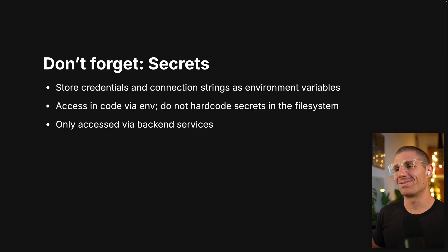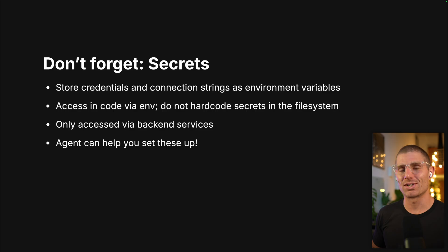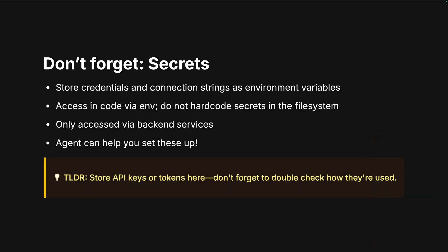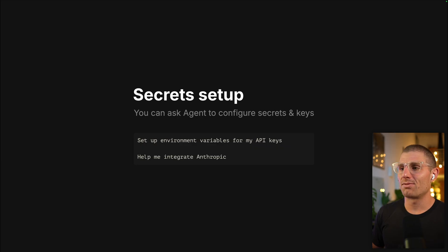Only access secrets with backend services — Agent's going to help you out with all of these things by default in Replit, but you have to double check. That's kind of the vibe coding credo. If you build something, you're responsible for it. If you write code, if you create something, you have to know how it works and double check. We have a security scanner — just type in 'security scanner' and go to that tab. It will pick up if any of your secrets are hard coded. That's a great way to double check. For secret setup, you can ask Agent: 'Set up environment variables for my API keys' or 'Help me integrate Anthropic' — it'll ask you for a secret. That easy.